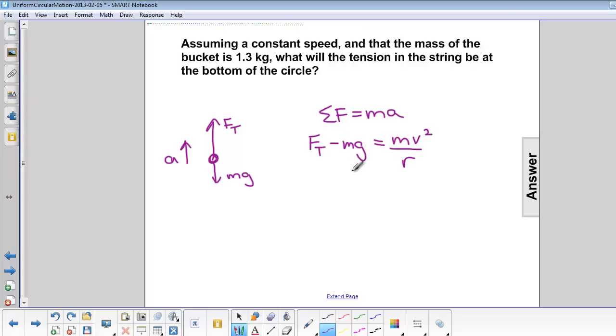If we're looking for force of tension, we're going to add mg to both sides. So we have F_T equals m times v squared over r, plus mg. We can factor out the m, and now we can plug in our numbers.